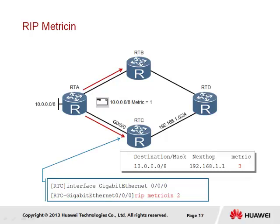We can further manage the communication of RIP messages through a number of different commands. The first is the RIP Metric In command, used to manipulate the metric of messages being received by a RIP router. In this example, the command is applied under the Gigabit Ethernet 0/0/0 interface, for which it is stated that any routes received should have their metric increased by a value of 2. The message transmitted from RTA is associated with a metric of 1 upon transmission, which when received will be incremented by a value of 2 and added to the IP routing table of RTC with a metric of 3.